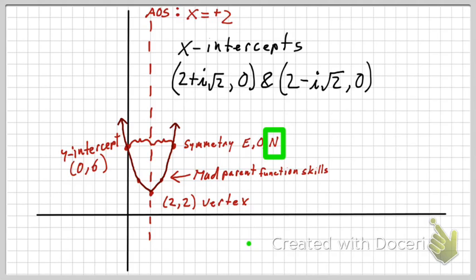So I've done everything the problem has asked me to do. I've graphed it. I've found the x-intercepts, y-intercepts, axis of symmetry, and the vertex. And that concludes this problem.